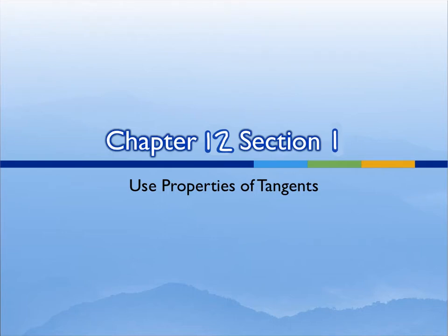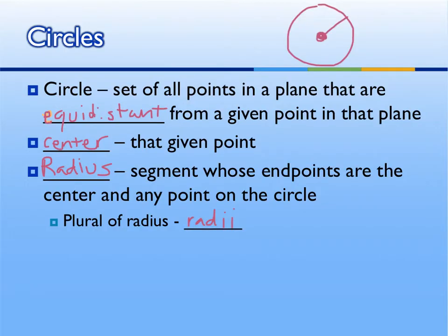Today we're going to be going over Chapter 12, Section 1, and in this section we are going to use properties of tangents. This section is super vocab heavy, so it's important that you understand the vocab words because you need to understand them in order to do the problems. So focus on the vocab for this section.